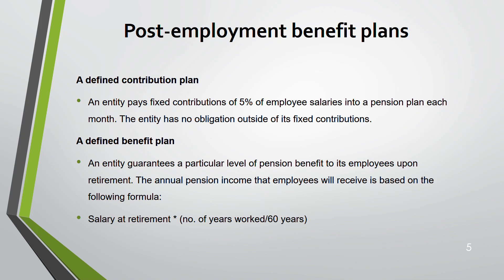The formula is: salary at retirement × number of years worked ÷ 60. The age of 60 is used because that is the typical retirement age for employees. This gives you the annual pension income each employee will receive.